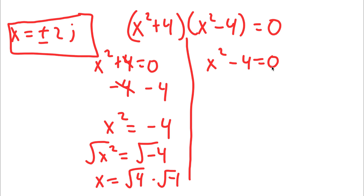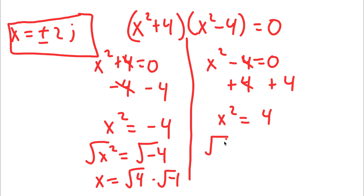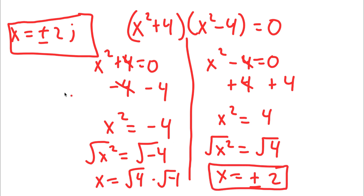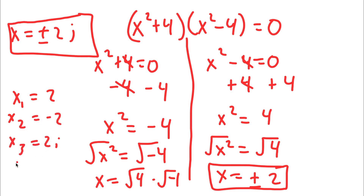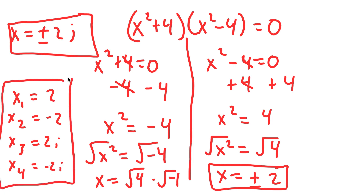For x squared minus 4 equals 0, I add 4 on both sides so x squared equals 4. Taking the square root on both sides, the square root of x squared is x, and the square root of 4 is positive or negative 2. So my four solutions are x equals 2, x equals negative 2, x equals 2i, and x equals negative 2i.